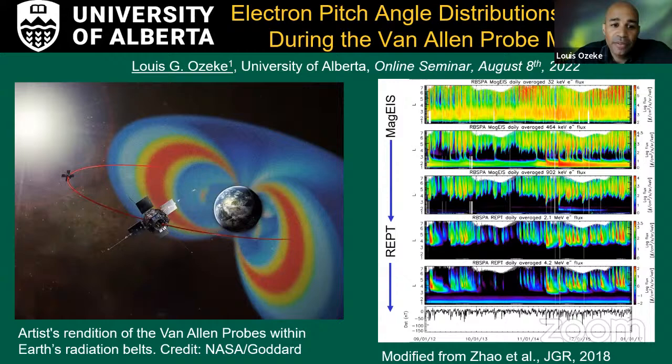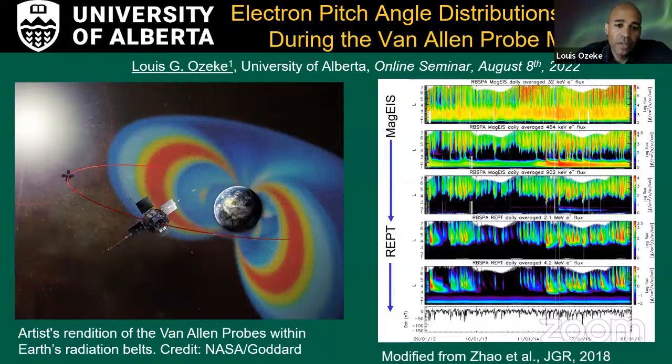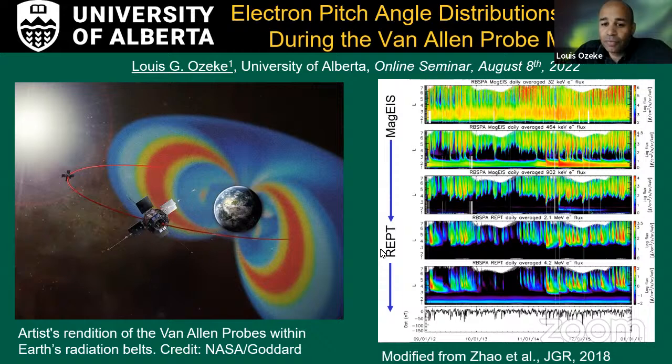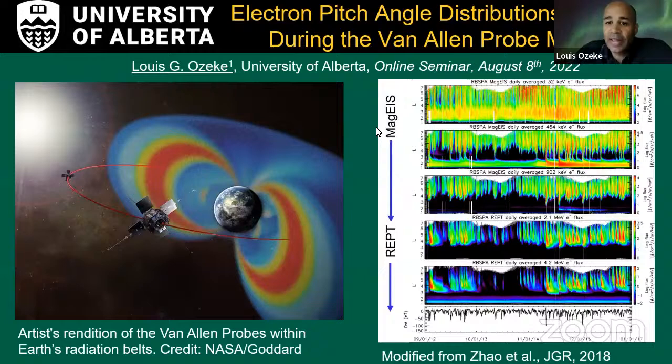As I'm sure everybody here is aware, the Van Allen Probe mission consisted of two identical spacecraft passing through the inner and outer radiation belt, as shown in the schematic on the left here. These are low inclination spacecraft. The key feature of these spacecraft that I'm going to make use of in this presentation is that these spacecraft were spinning so that they were able to detect the full pitch angle distribution of particles. There are two instruments that I'm going to be focused on, the REPT instrument and the MagEIS instrument. And the plot on the right here illustrates some electron flux data from those two instruments.